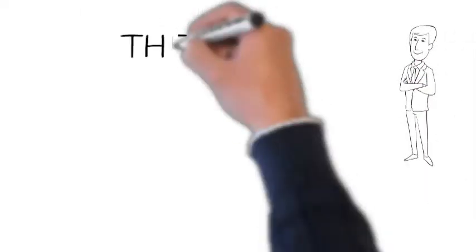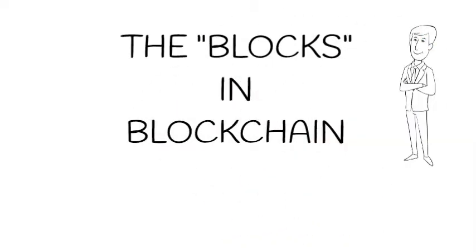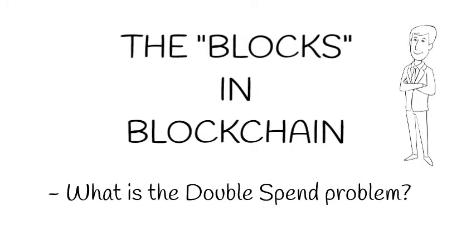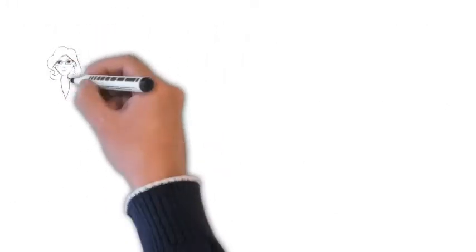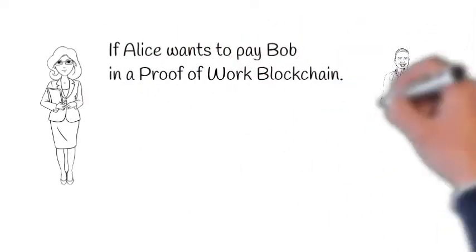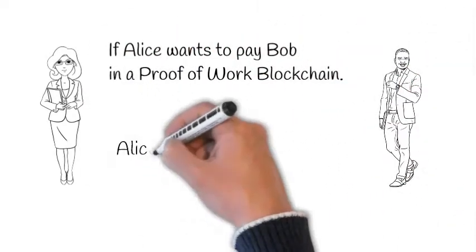In this video in the series, The Blocks and Blockchain, we ask the question: what is the double spend problem? Reviewing the example, if Alice wants to pay Bob in a proof-of-work blockchain...